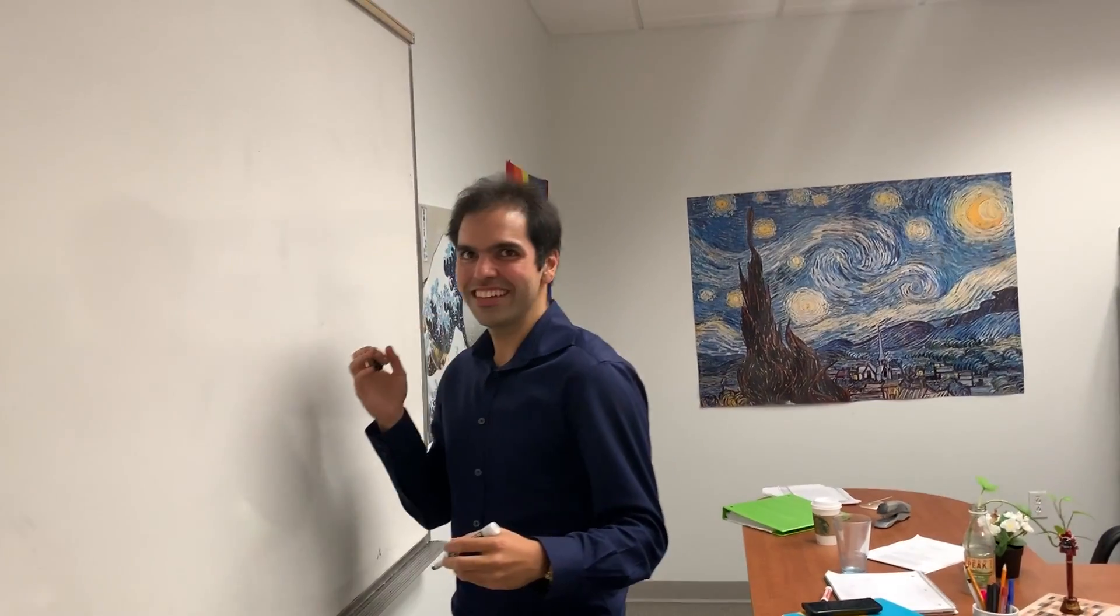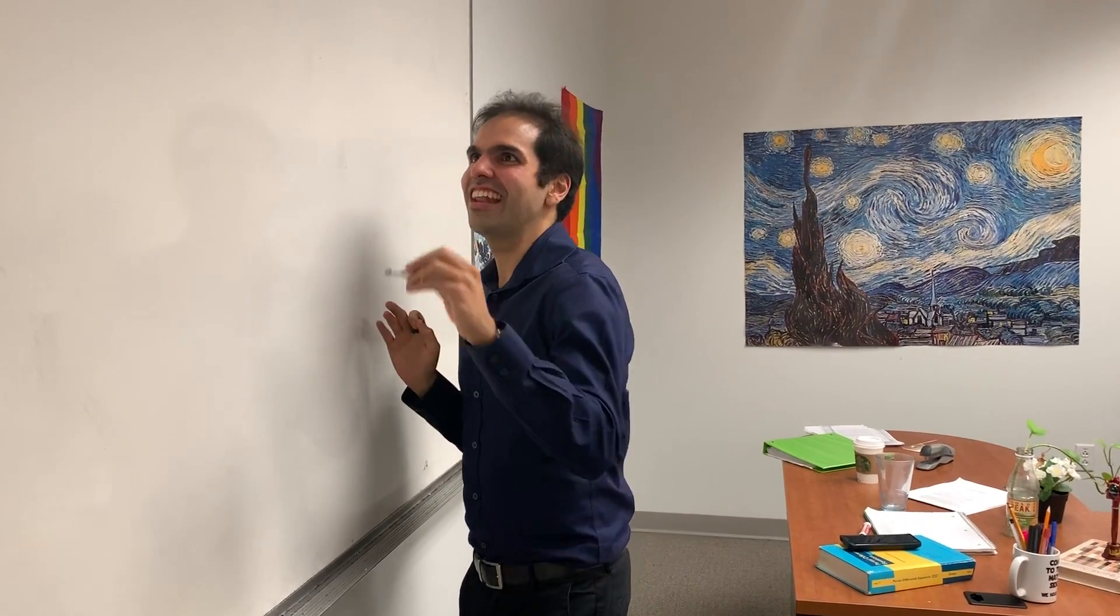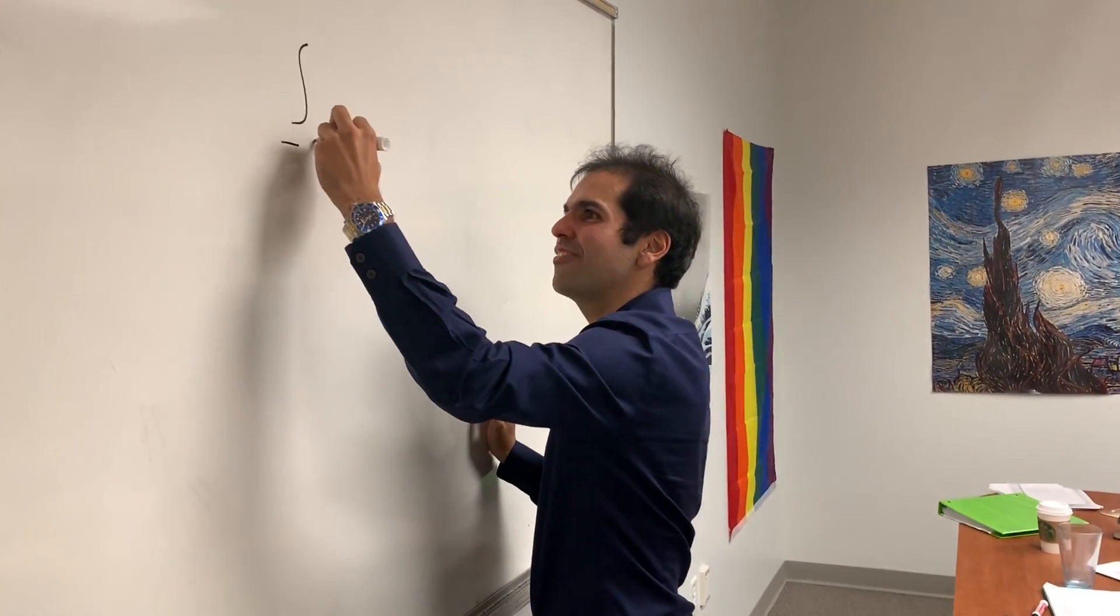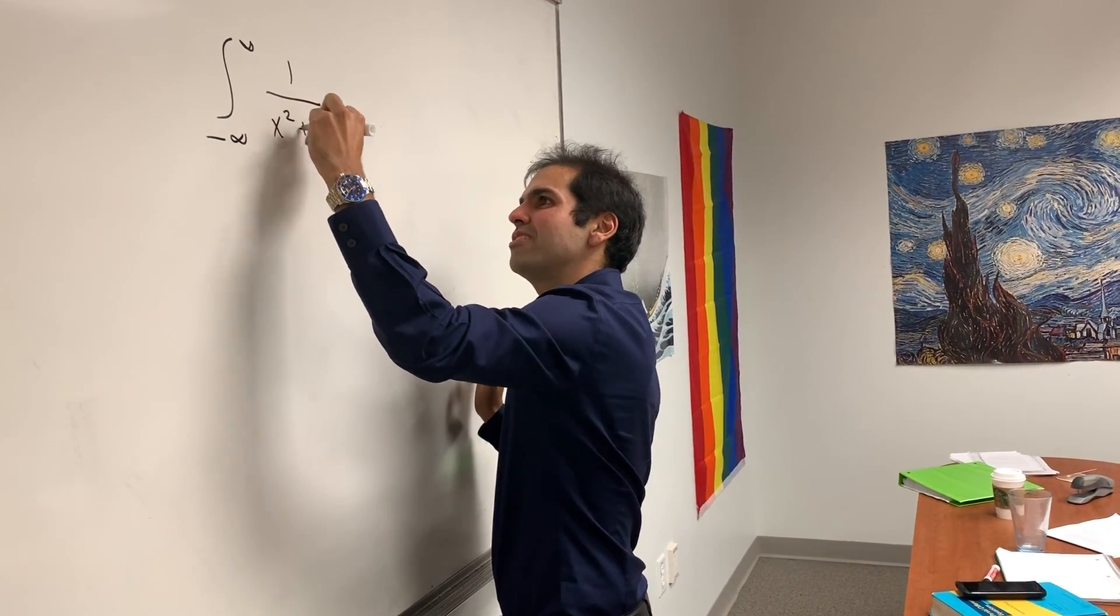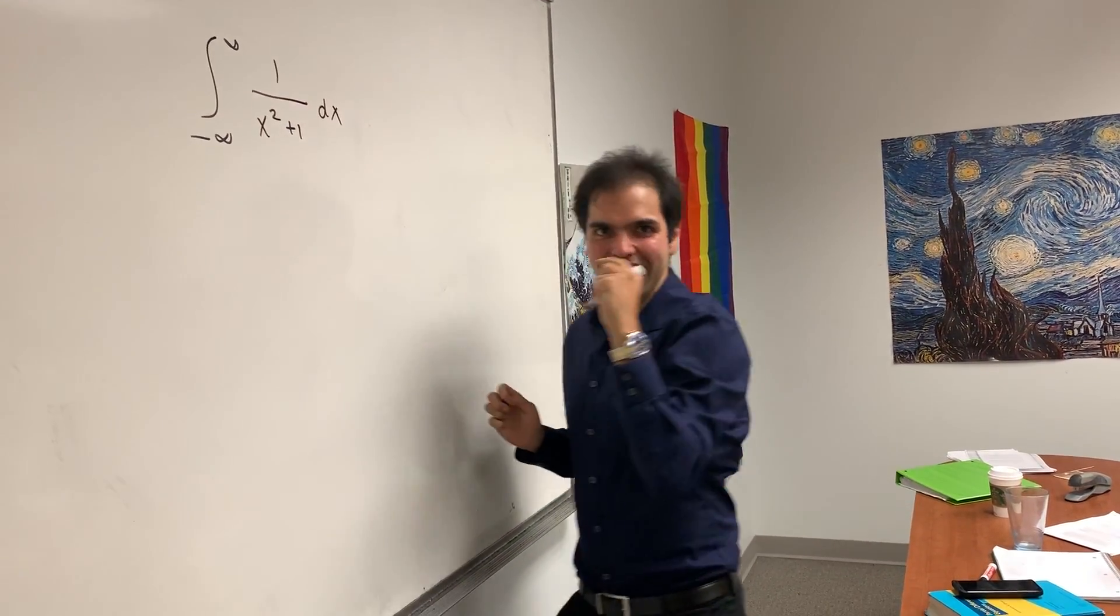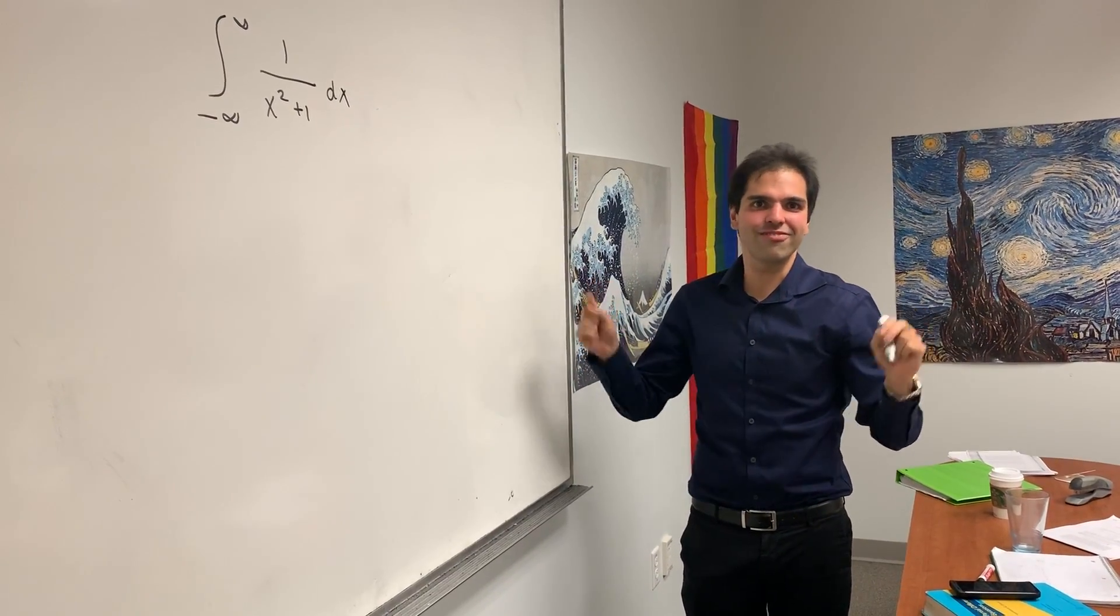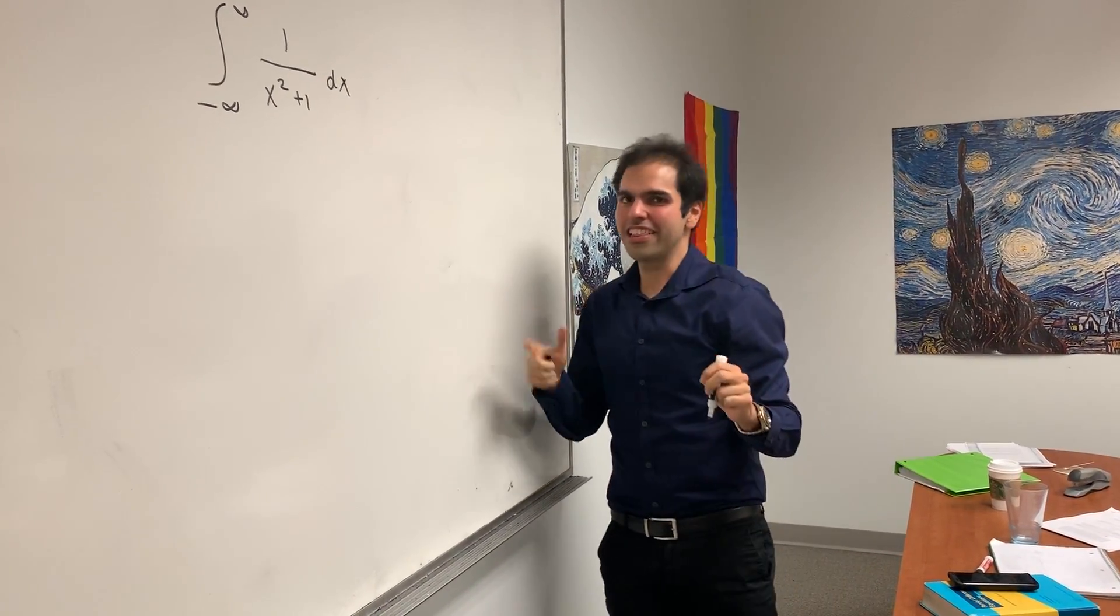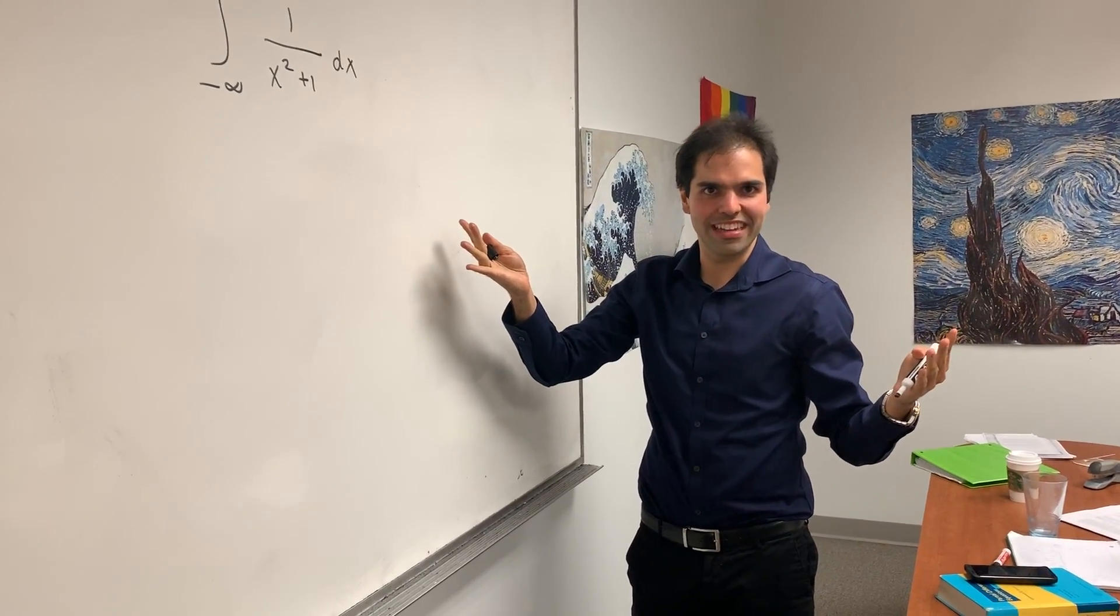Absolutely no problem right on the spot. Okay, this seems very silly, but let's calculate the integral from minus infinity to infinity of 1 over x squared plus 1 dx. And of course you can say it's arctangent of infinity minus arctangent of minus infinity, which I think gives you pi, but let's see how we can do this using complex analysis.